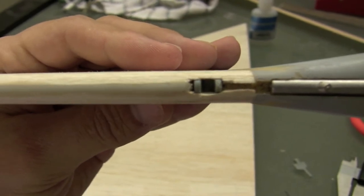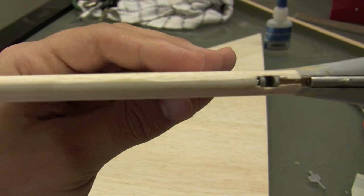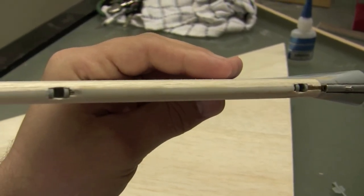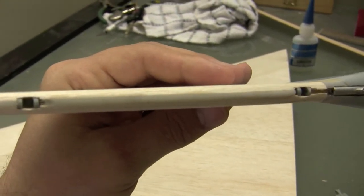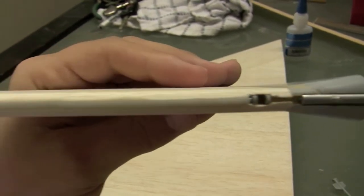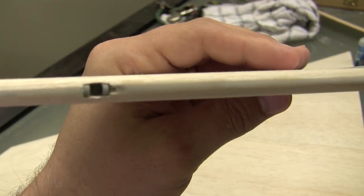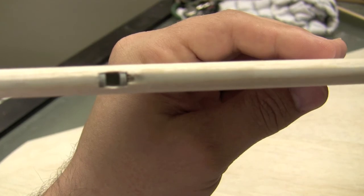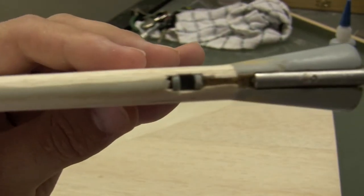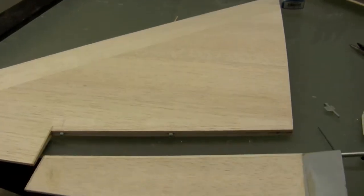All right, I am pretty much done with the aileron. If you look at the leading edge there it looks really nice. I've sanded it smooth. We've got the tubes sealed in there. The rod goes through there nice and easy. So pretty much I'll finish up after we glue in the hinges. I'll finish up those last little spaces there and do the detail work later, but for right now we're going to call that good so we can move on.